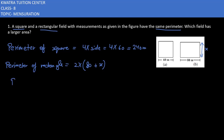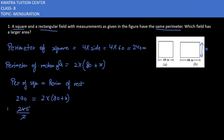Since the perimeter of the square equals the perimeter of the rectangle, we can equate both values. The perimeter of the square is 240, and the perimeter of the rectangle is 2 into (80 plus X). Dividing 240 by 2 gives 120 on the left side, so 80 plus X equals 120, which means X equals 120 minus 80, giving us 40 meters. So the breadth of the rectangle is 40 meters.